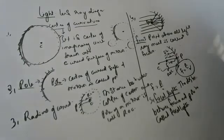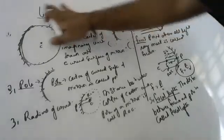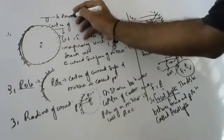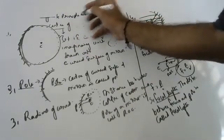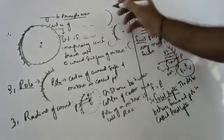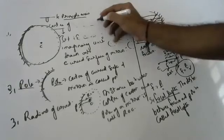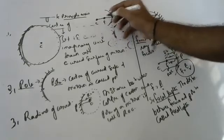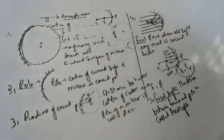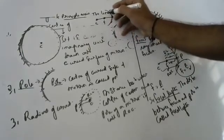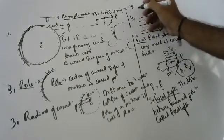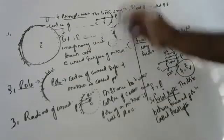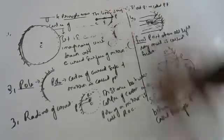Next: principal axis. What is principal axis? The line joining the center of curvature, focus, and pole is called the principal axis.